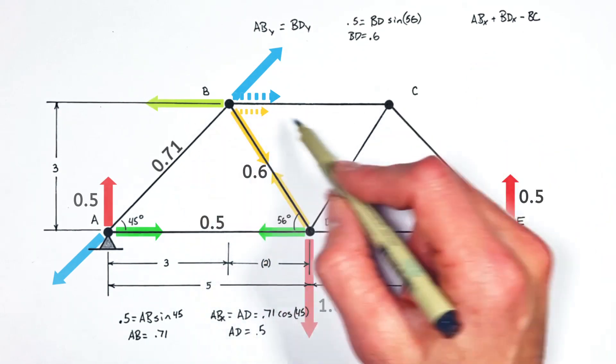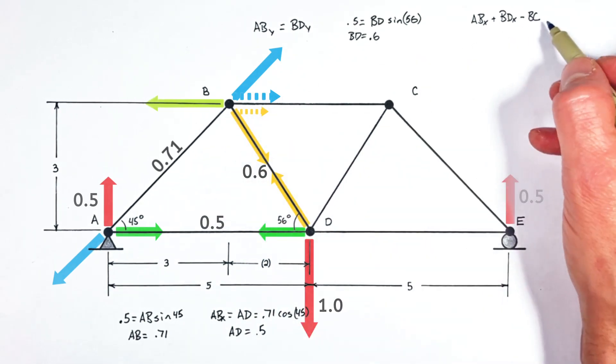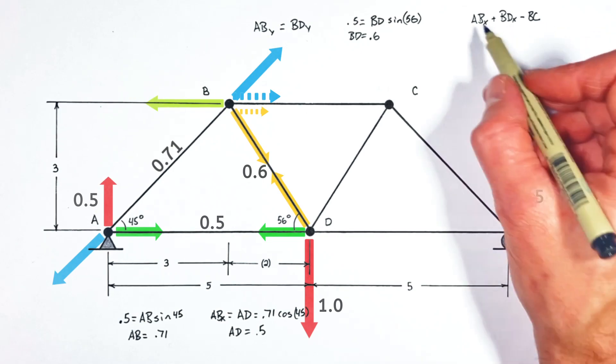Now, BC acts entirely in the horizontal axis. So, I'm not going to say this is BCX. I'm just going to call it BC.